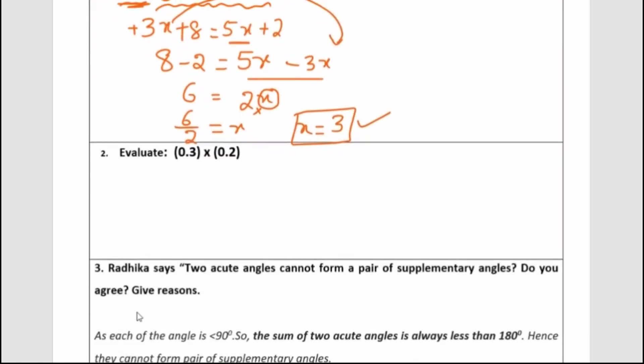Moving on to the second question: evaluate 0.3 multiplied by 0.2. We are going to multiply 0.3 and 0.2. Before multiplying decimal numbers, we have to keep one important thing in mind.